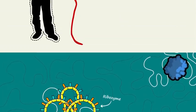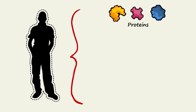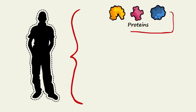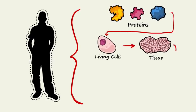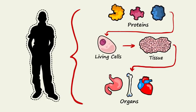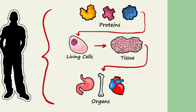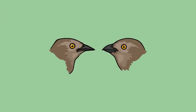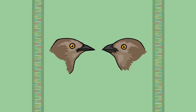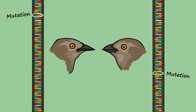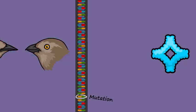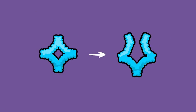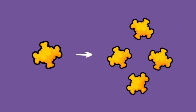In multi-celled creatures like ourselves, proteins — which are coded for by genes — interact with other proteins and molecules to make up living cells. Cells make up tissues, tissues make up organs, and organs ultimately make up entire living creatures. Individuals have different traits — in this case, differences in beak shape — largely because of differences or mutations in their genetic code. These differences can either cause changes in a specific protein shape and therefore its function, or mutations can change when or how much of a particular protein will be produced.